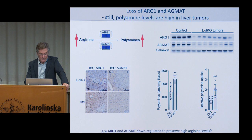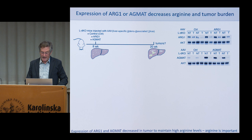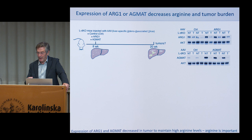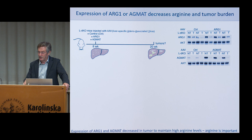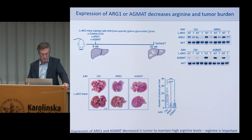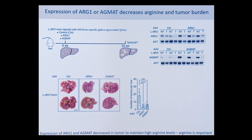We wondered whether the ARG1 and AgMet genes are switched off — that is, whether polyamine synthesis is turned down — to preserve high arginine levels. So we went back to our mouse model and introduced these two genes, ARG1 or AgMet, in a way which they could not be turned off as the tumor developed. We put them under a different promoter and asked what the consequences would be — the idea being that ensuring expression of these two enzymes would consume the arginine, and would this bring tumor levels down? Indeed, the tumor burden was dramatically decreased upon expression of either one of these two enzymes.